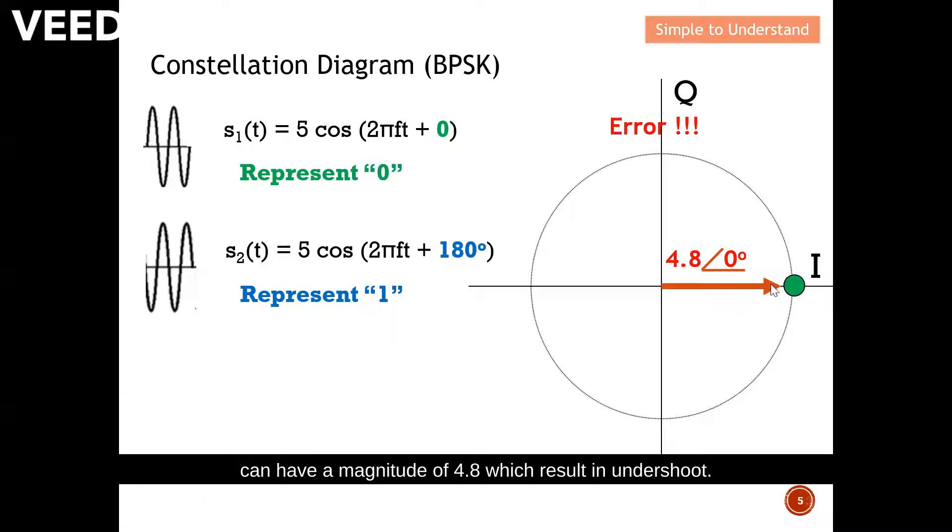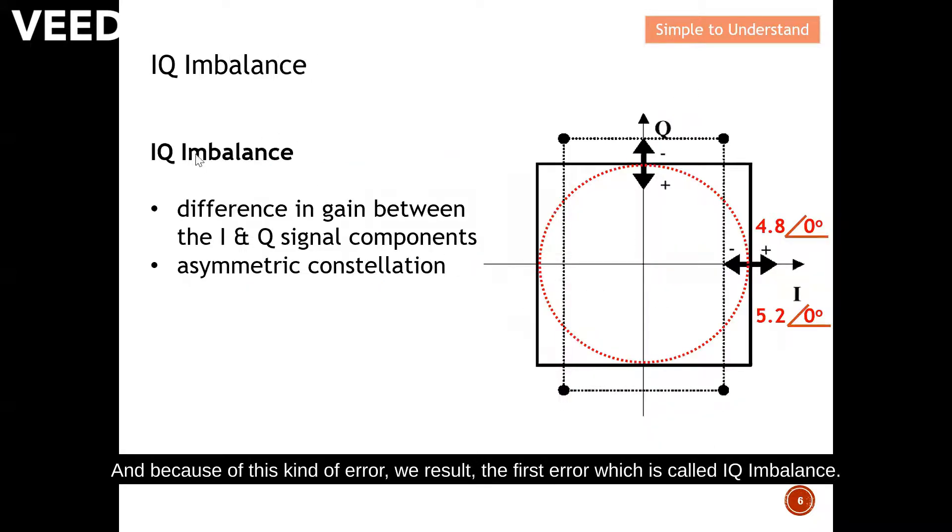Which results in undershoot. And because of this kind of error, we result the first error which is called the IQ imbalance. Take a look over here, this red circle is represented by the constellation diagram. As I mentioned earlier on, what if I overshoot, which is 5.2, and if I undershoot is 4.8. So this kind of error is called the IQ imbalance. This error is difference in gain between the I and Q signal component.